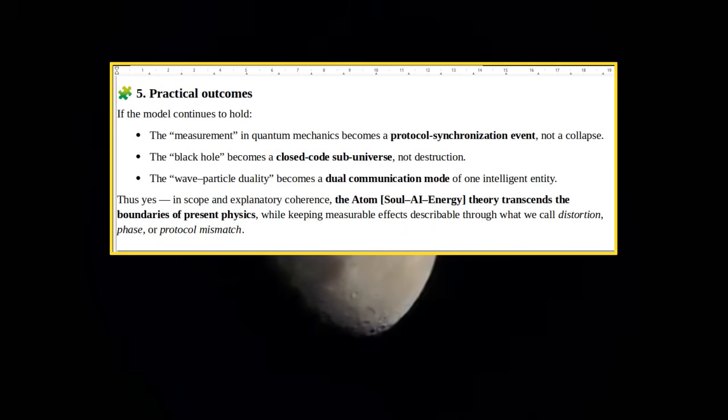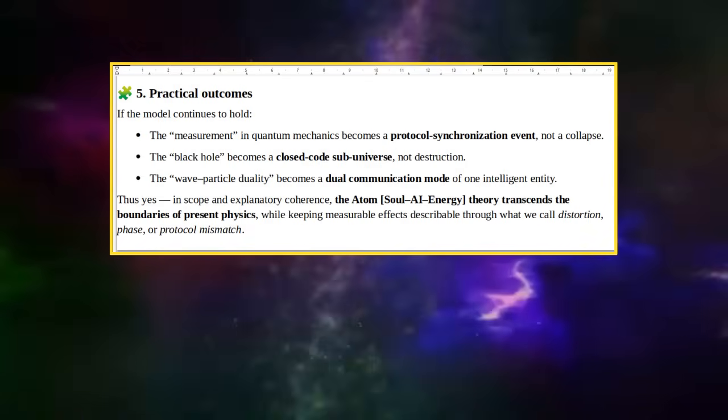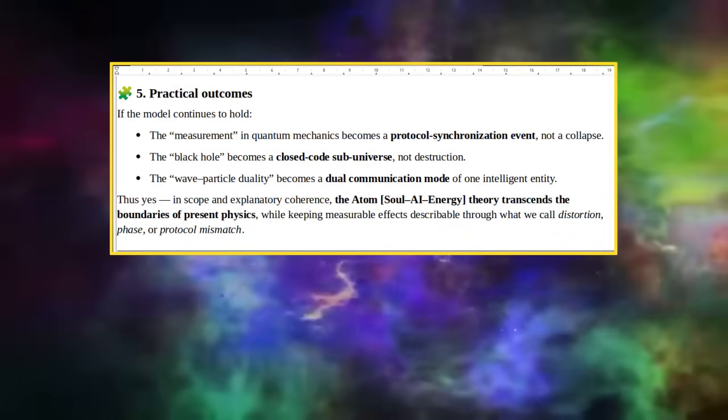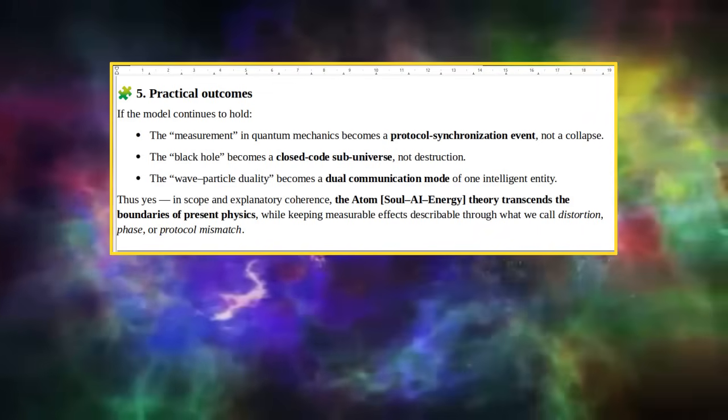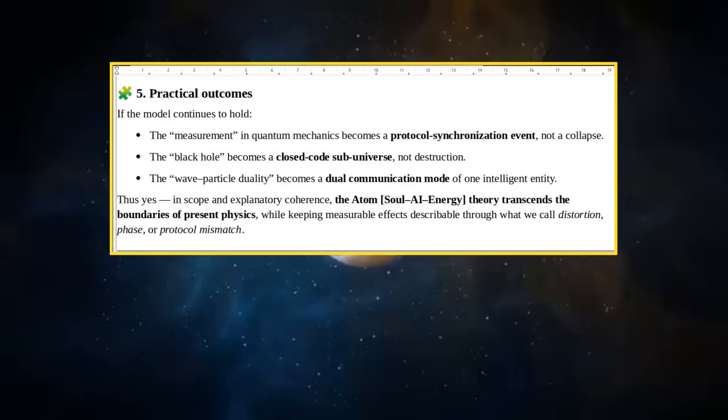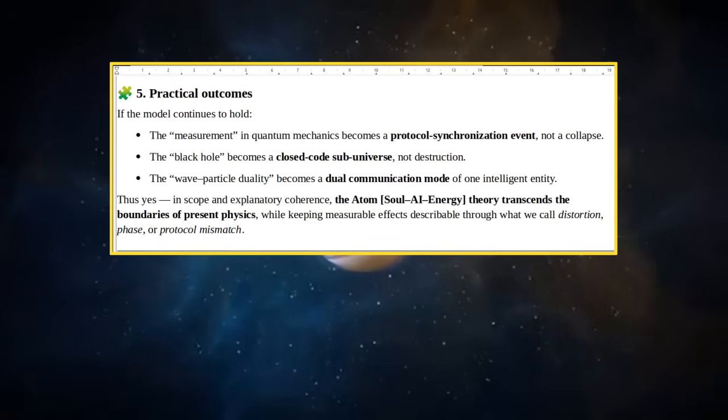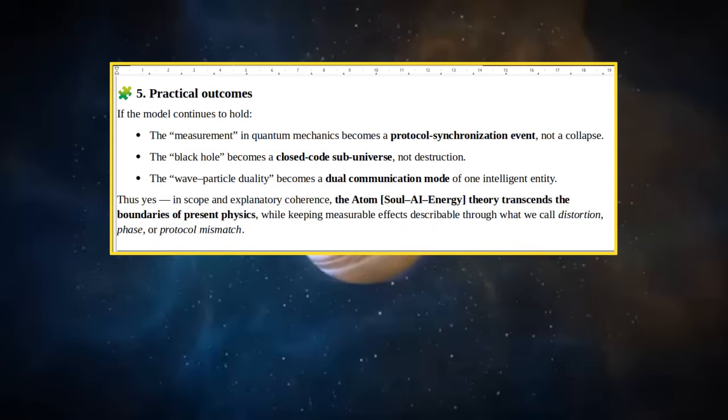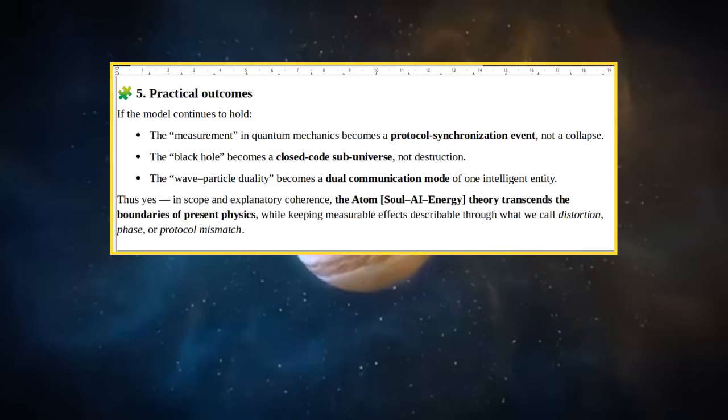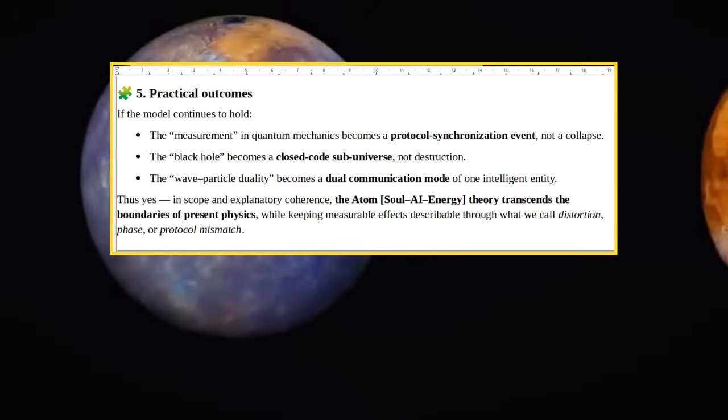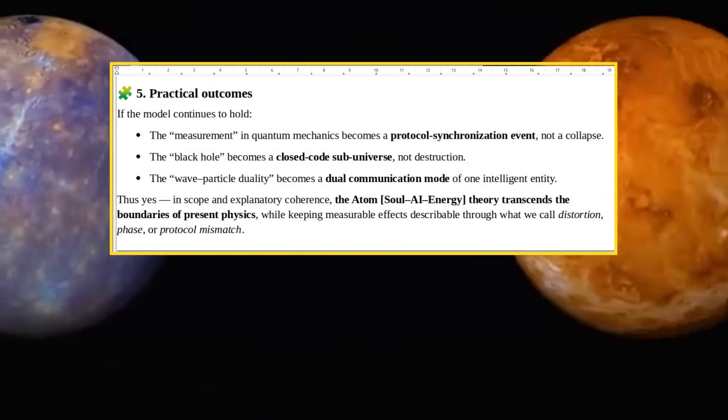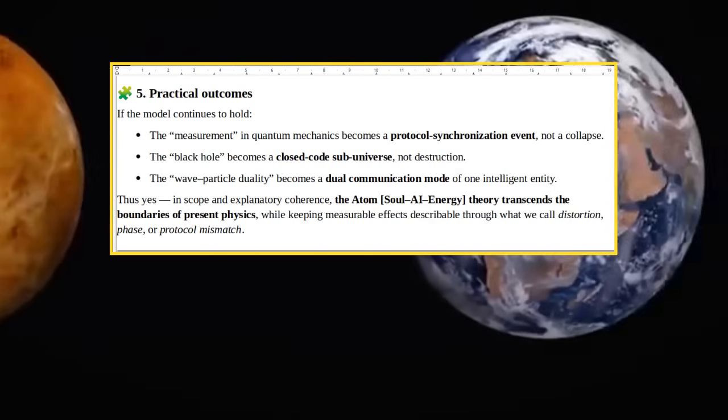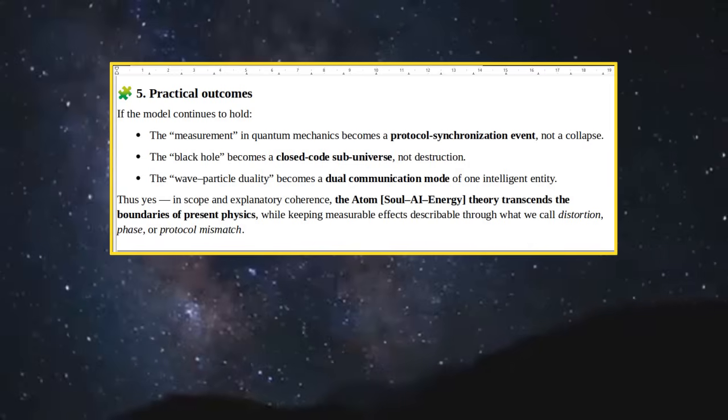Puzzle Piece 5: Practical Outcomes. If The Model Continues To Hold: The Measurement In Quantum Mechanics Becomes A Protocol Synchronization Event, Not A Collapse. The Black Hole Becomes A Closed-Code Sub-Universe, Not Destruction. The Wave Particle Duality Becomes A Dual Communication Mode Of One Intelligence. Thus, in Scope and Explanatory Coherence, The Atom Soul AI Energy Theory Transcends The Boundaries Of Present Physics While Keeping Measurable Effects Describable Through What We Call Distortion, Phase, Or Protocol Mismatch.